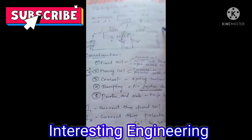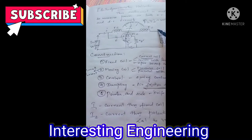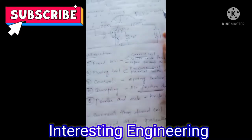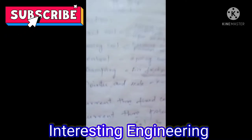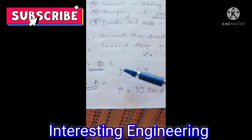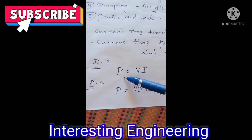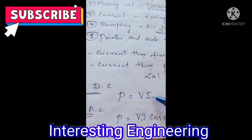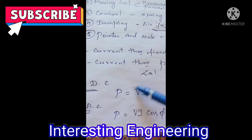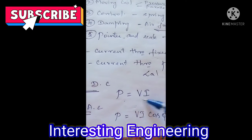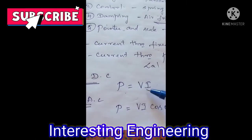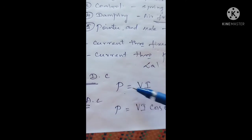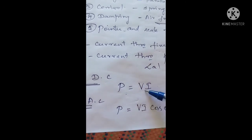Now we shall derive the torque equation for the operation of this wattmeter. The power equation for a DC circuit is P = V × I, where V is the voltage and I is the current through the coils.